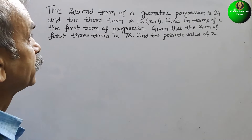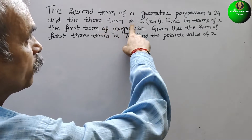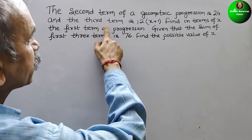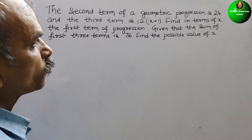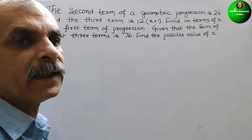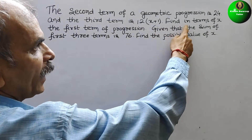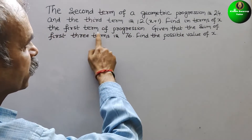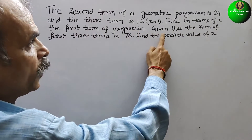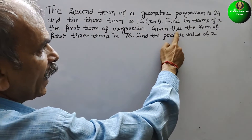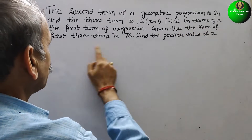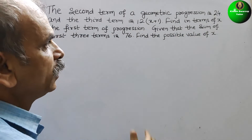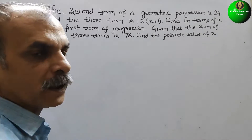Your question is: the second term of a geometric progression is 24, and the third term is 12(x + 1). Find, in terms of x, the first term of the progression. Also, given that the sum of the first three terms is 76, find the possible value of x.